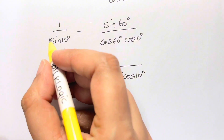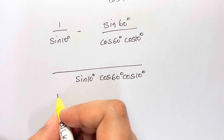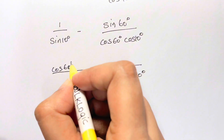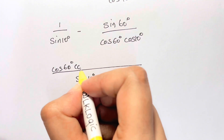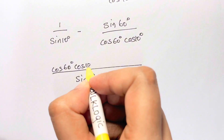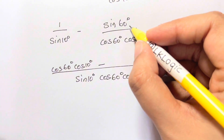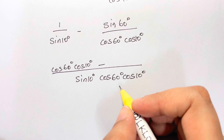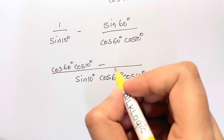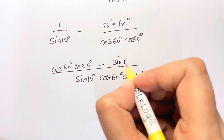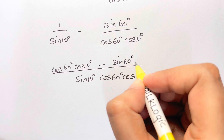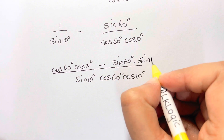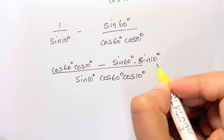In the numerator after taking LCM, we have cos(60°)·cos(10°) minus sin(60°)·sin(10°).